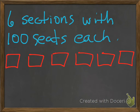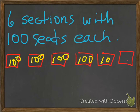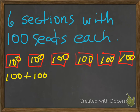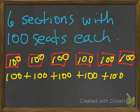So we have six sections with 100 seats each, and we can draw it out like this. Notice I have one, two, three, four, five, and six boxes. We can easily go ahead and add 100 to each section, and we get this written in here. We actually have 100 plus 100 plus 100 plus 100 plus 100 plus 100 — so we have six of them.